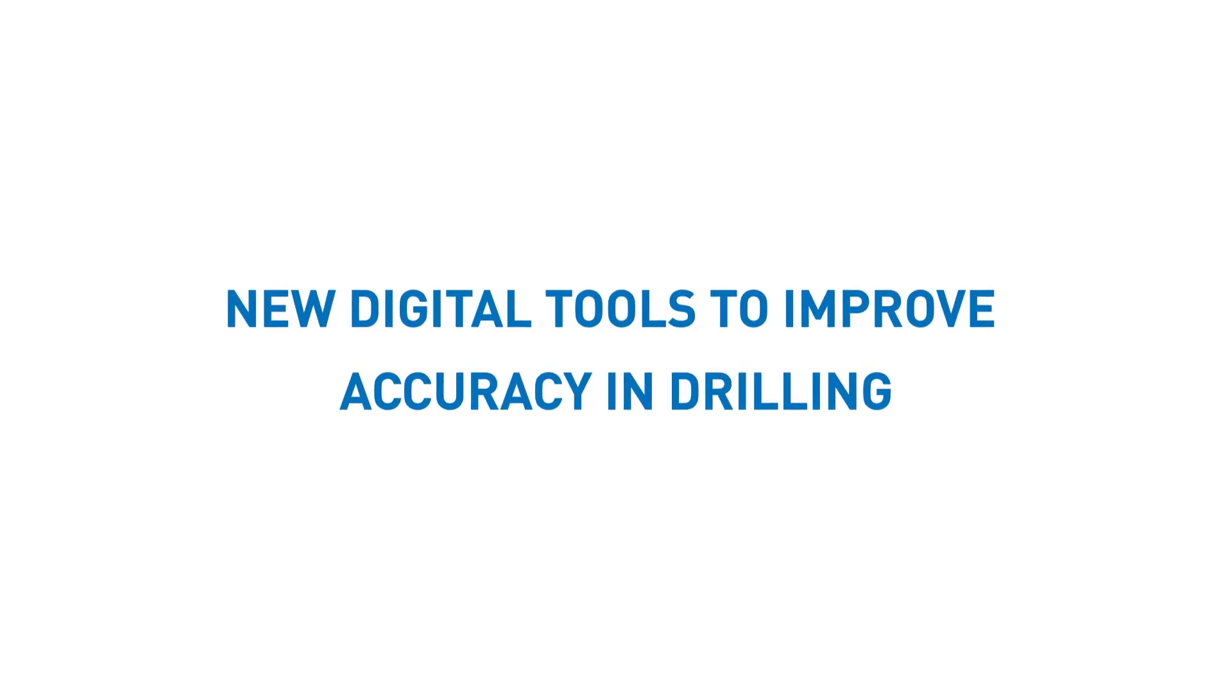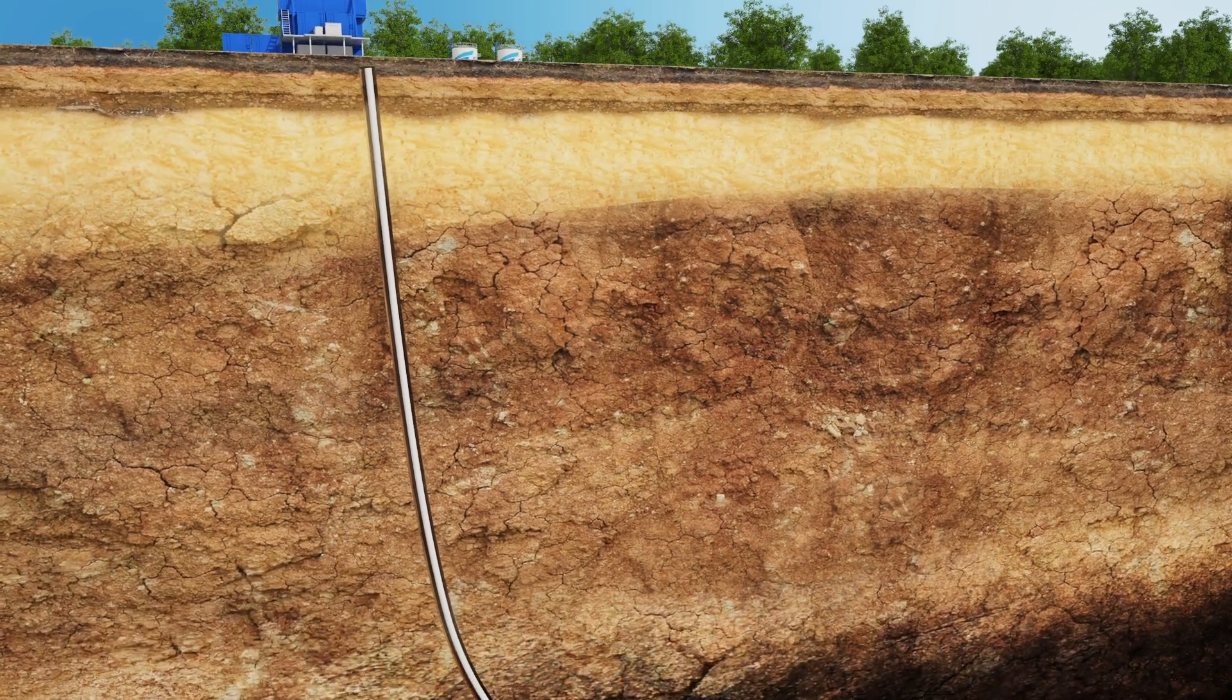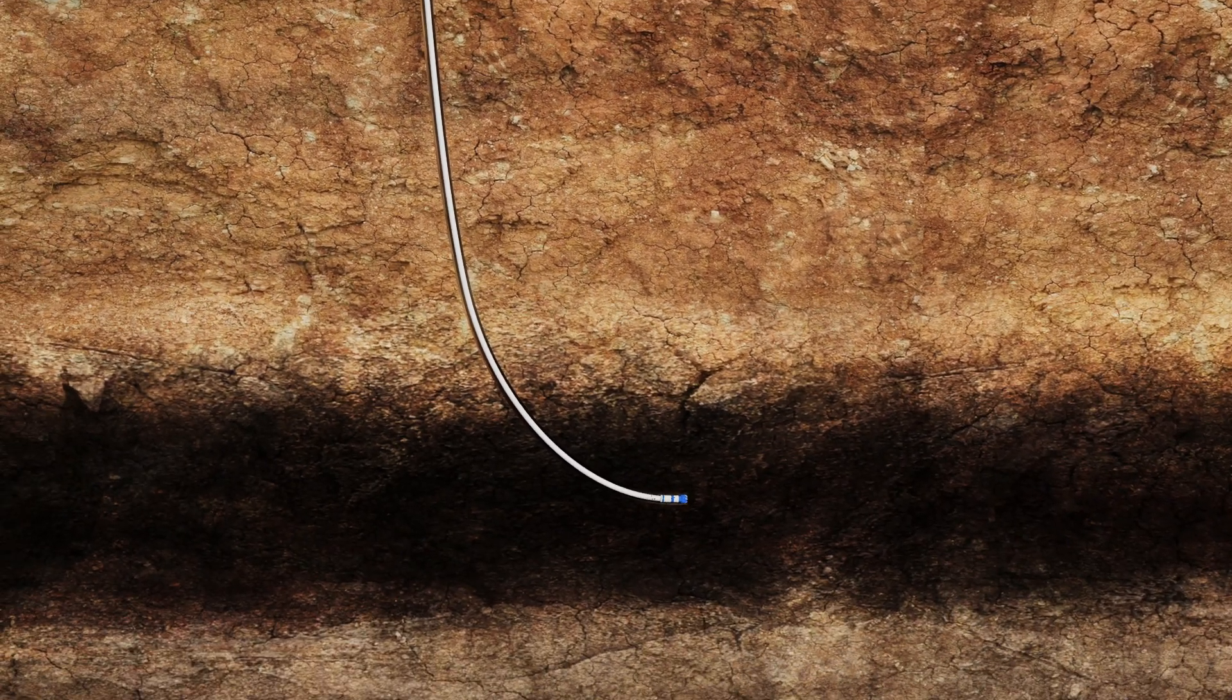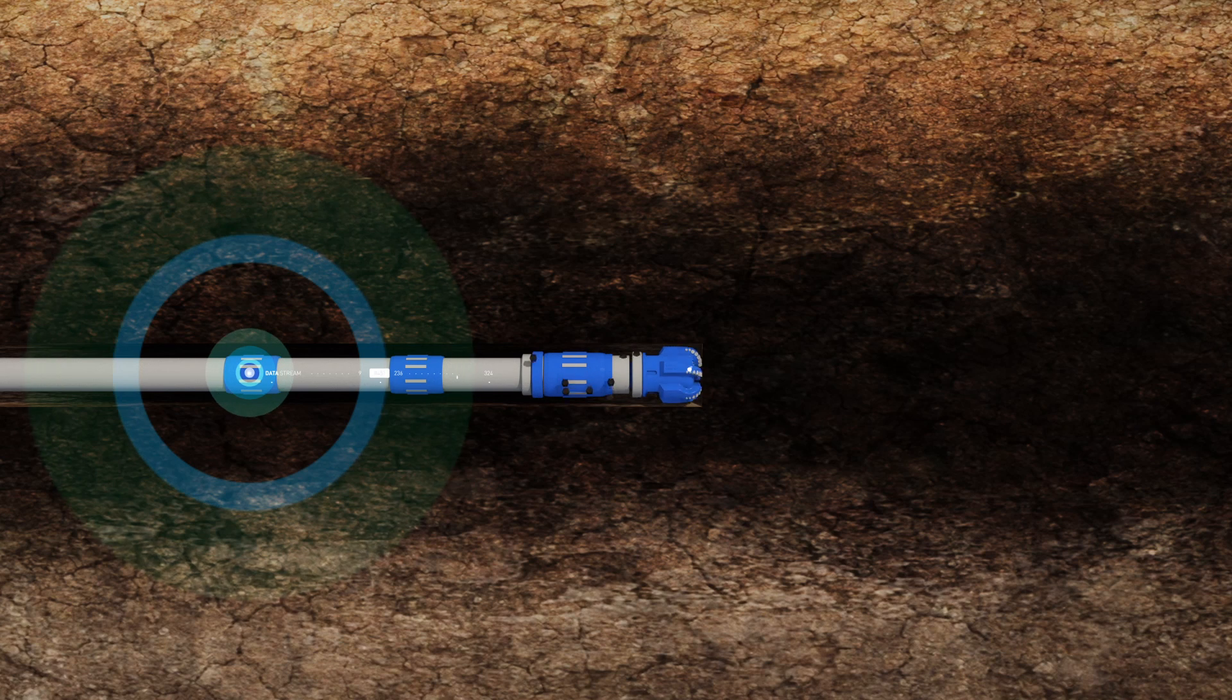Gazprom Neft drills more than 800 high-tech wells every year. A special sensor is used to determine a rock type near the drill bit at a depth of several kilometers.